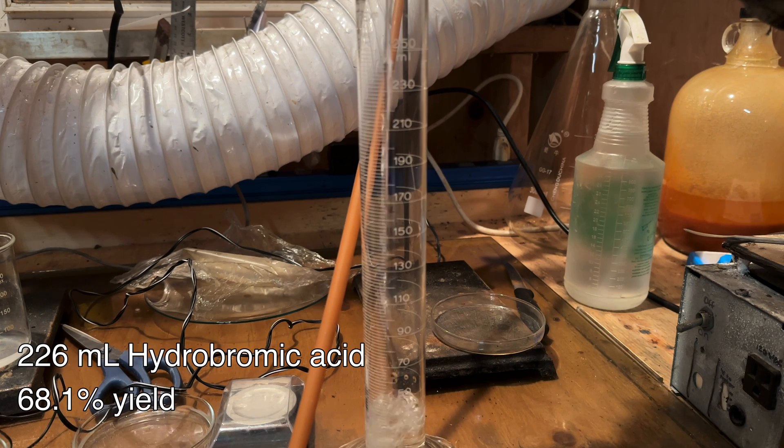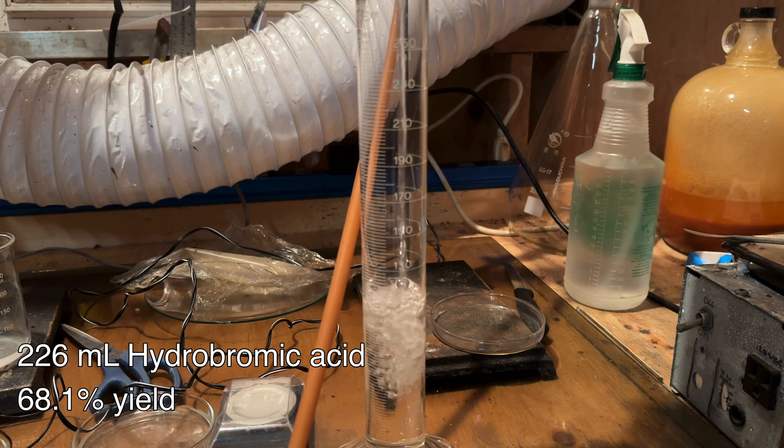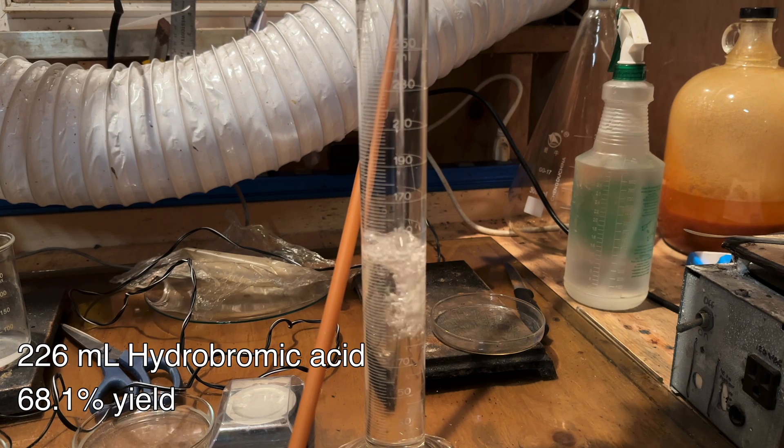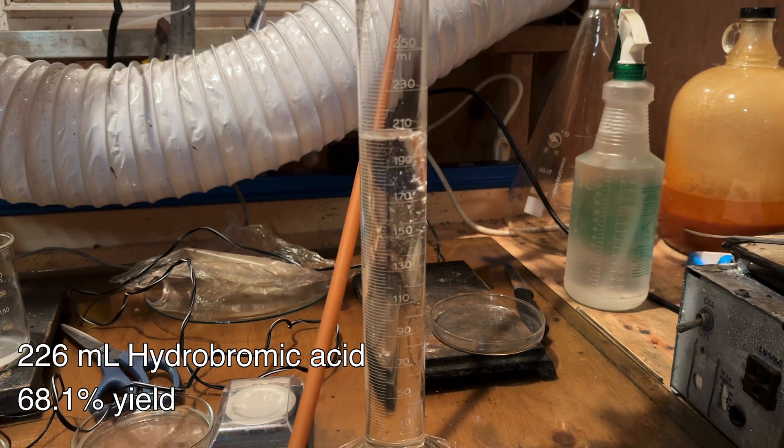In the end, 226 milliliters of concentrated azeotropic hydrobromic acid was collected, corresponding to a 68.1% yield based on the starting potassium bromide. This is surprisingly good considering it sat for so many years.